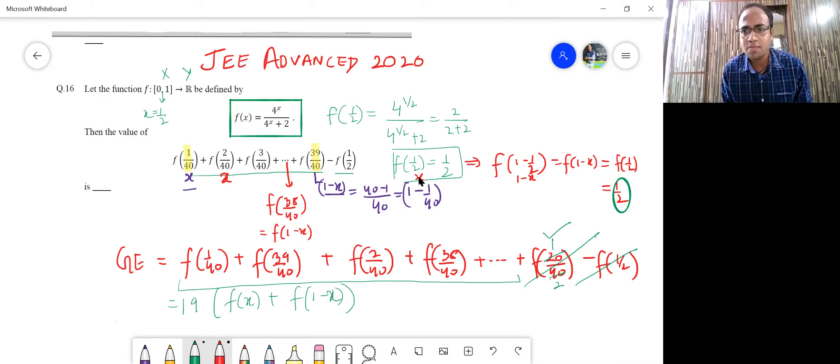This will be 19 times the combination of f(x) plus f(1-x), agreed. And as I can see, f(x) plus f(1-x), in general we can say this is nothing but simply 1/2 plus 1/2, which is nothing but 19 into 1. The answer is 19.